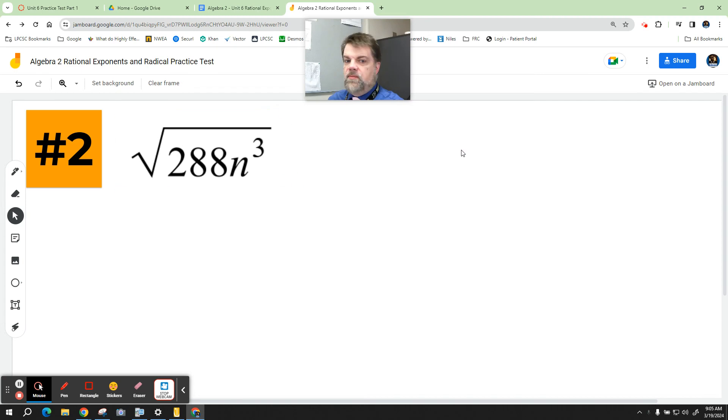All right, so now this one, to simplify this, there's two things. First, we have to remember that when there isn't a number written down, that it's a two. So we're going to deal with two things, but the first step in this process is to separate this.